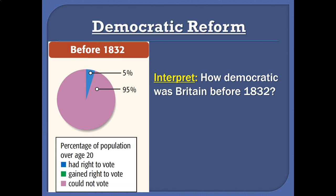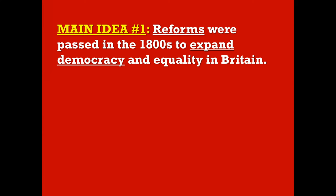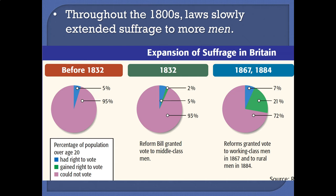If you look at our graph right here on the left, it says before 1832, 95% of people in Britain could not vote — only 5% could. So that makes Britain sound really undemocratic. And it was from the modern perspective, but in the time period of the 1800s, in a lot of countries it wouldn't be 5%, it would be 0% who had a right to vote. Nonetheless, Britain has a lot of work to do to expand its democracy.